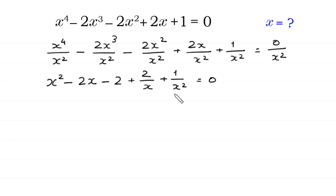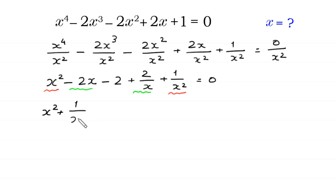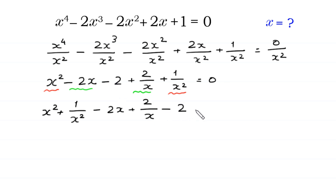Now we group terms: we write x squared with 1 over x squared together, and the term negative 2x with 2 over x together. This gives us: x squared plus 1 over x squared, minus 2x plus 2 over x, minus 2, is equal to 0.